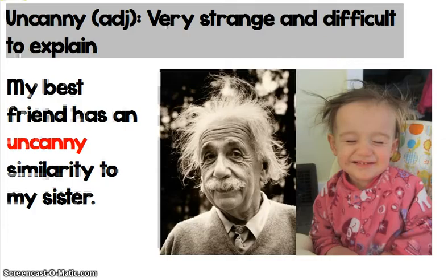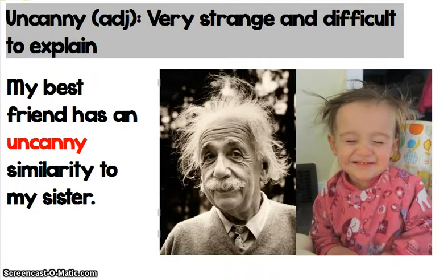Our next word is uncanny. Uncanny is an adjective, and I know we are familiar with the word canny — but uncanny does not mean not canny, as you might expect. Uncanny is a word all on its own that basically means very strange and difficult to explain. My best friend has an uncanny similarity to my sister. You wouldn't expect your friend to look like your sister — they're not related by blood. So for your best friend to look like your sister could be described as uncanny. It's strange and you can't really explain it.